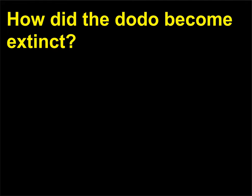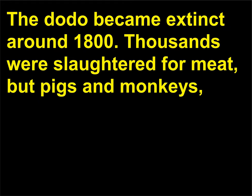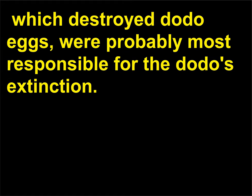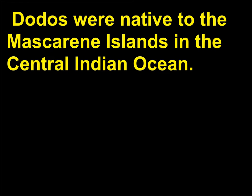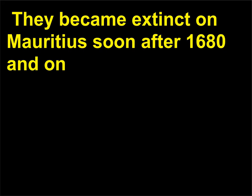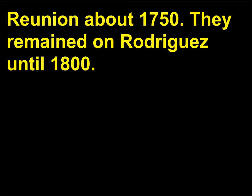How did the dodo become extinct? The dodo became extinct around 1800. Thousands were slaughtered for meat, but pigs and monkeys, which destroyed dodo eggs, were probably most responsible for the dodo's extinction. Dodos were native to the Mascarene Islands in the central Indian Ocean. They became extinct on Mauritius soon after 1680, and on Réunion about 1750. They remained on Rodrigues until 1800.